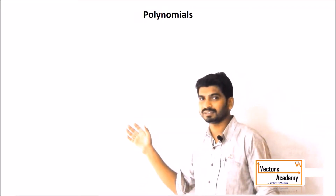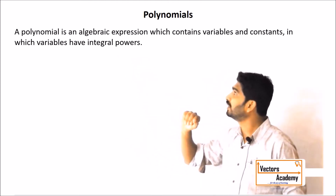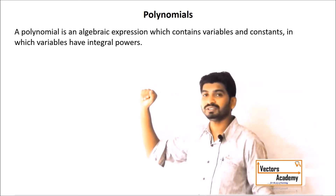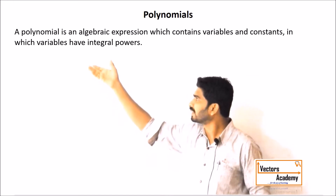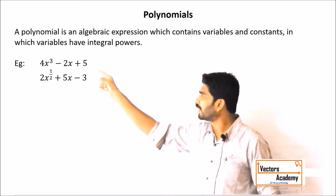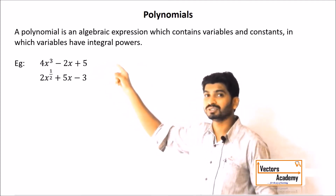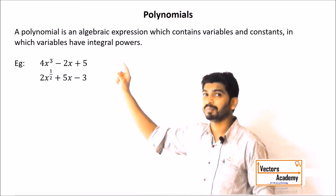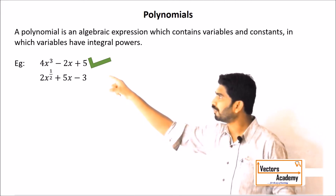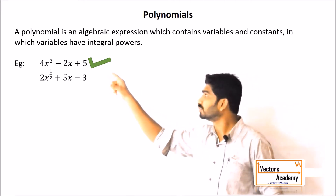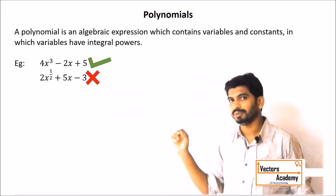Today let's have a look at what polynomials are and how they are classified. A polynomial is basically an algebraic expression which contains variables as well as constants and has integral power of the variables. For example, consider these two algebraic expressions. The first one contains the variable x as well as some constants, and all the powers of x are positive integers. So this is a polynomial. Whereas the second expression has a power of x as 1/2, which is not an integer — it is a fraction. So this is not a polynomial.